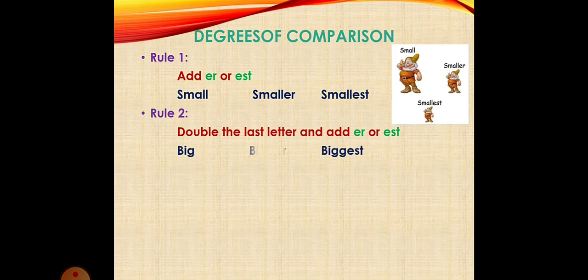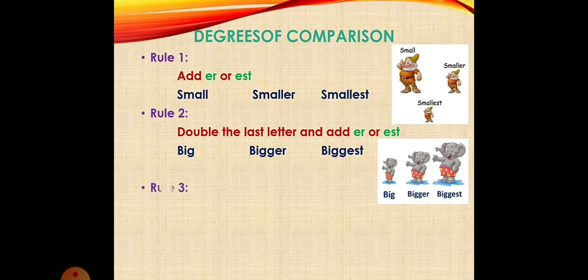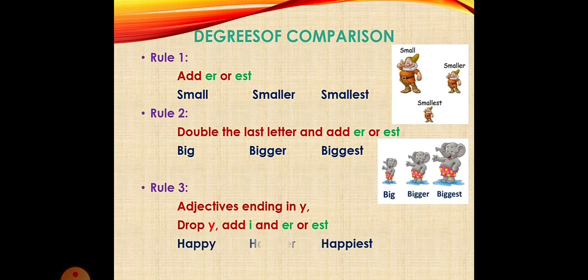As in tall, taller, tallest. Second rule is: to some adjectives, we double the last letter and add ER or EST, as in big, bigger, biggest.